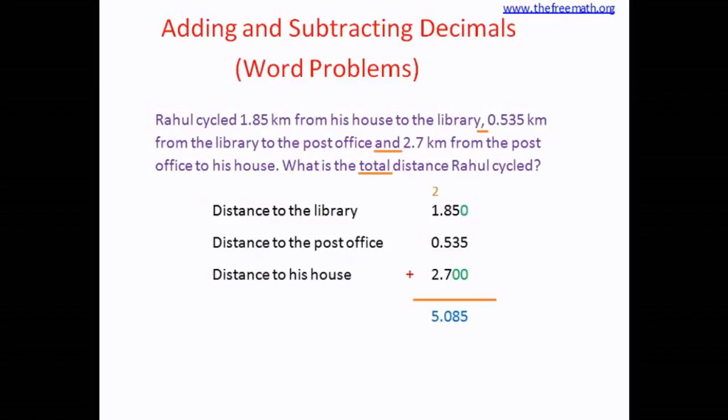2 plus 1 plus 2 equals 5. So the sum is 5.085 or 5 and 85 thousandths. That means the total distance that Rahul cycled is 5.085 kilometers or 5 and 85 thousandths kilometers.